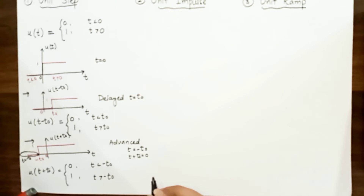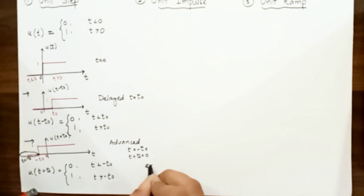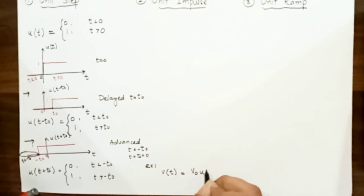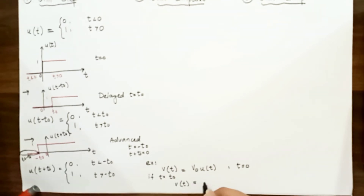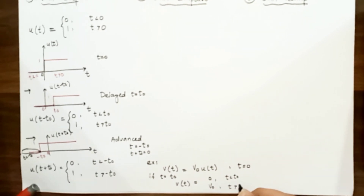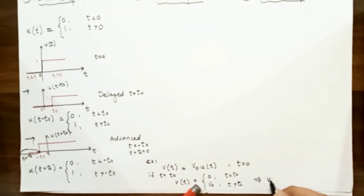Now let's take an example where we apply the unit step function to an abrupt change in voltage or current, like changes that occur in circuits of control systems or digital computers. Voltage v(t) can be expressed in terms of the unit step function as V₀·u(t), where v(t) equals 0 for t less than 0, and v(t) equals V₀ for t greater than 0.